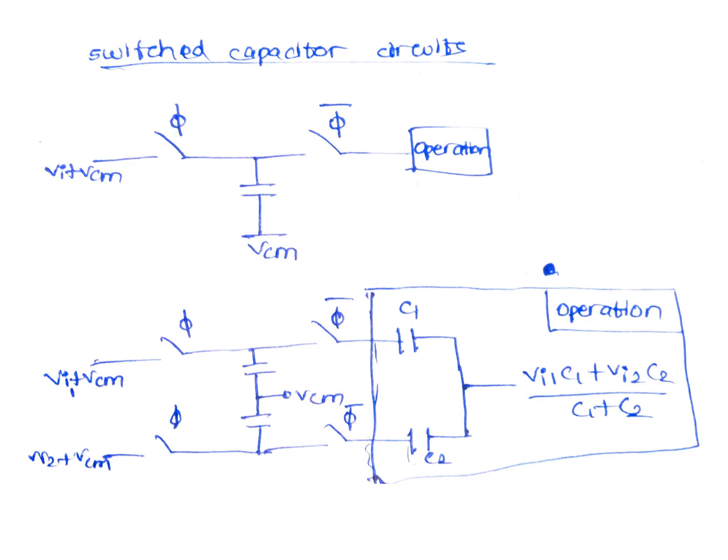When phi switch is closed, capacitor is charged to VIN and when phi bar is closed, capacitor discharges and operation takes place. In the second figure, this is the basic adder circuit.